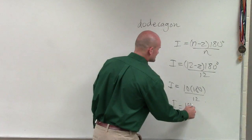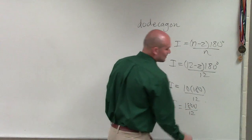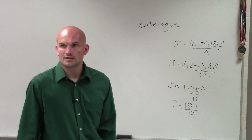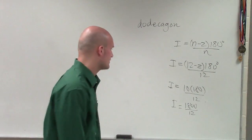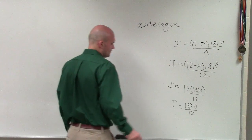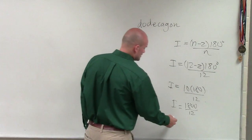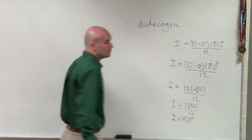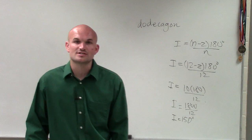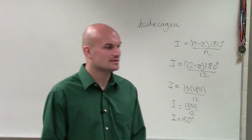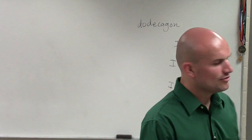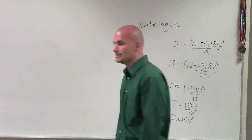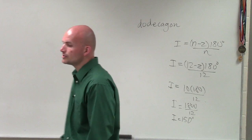So therefore, i equals 10 times 180 divided by 12. i equals 1,800 divided by 12. And 1,800 divided by 12 is 150. So therefore, i equals 150 degrees. What that means is, if you have a regular dodecagon, the measures are all going to be equal, and each of those equal measures is going to be 150 degrees.